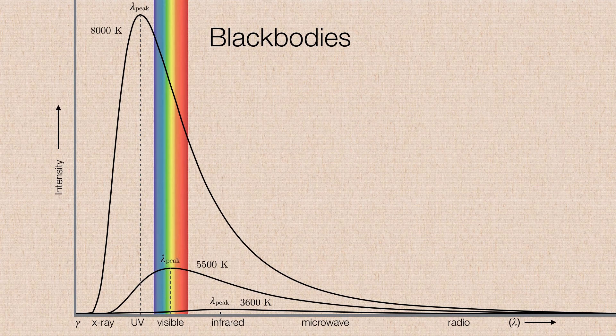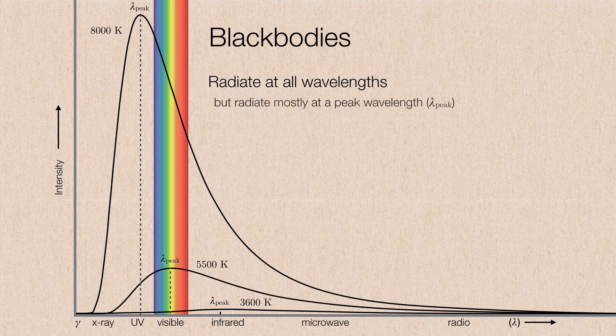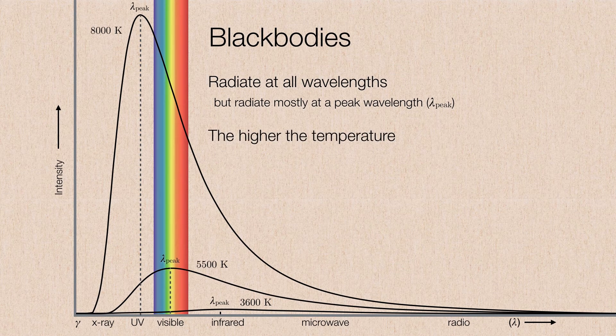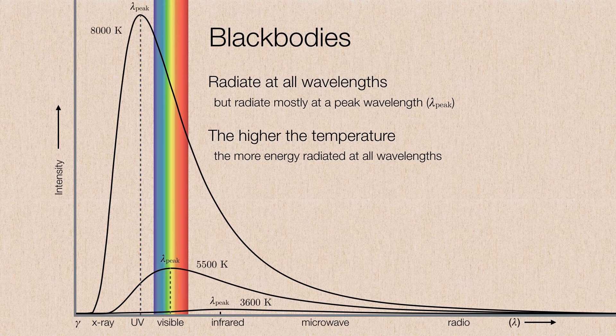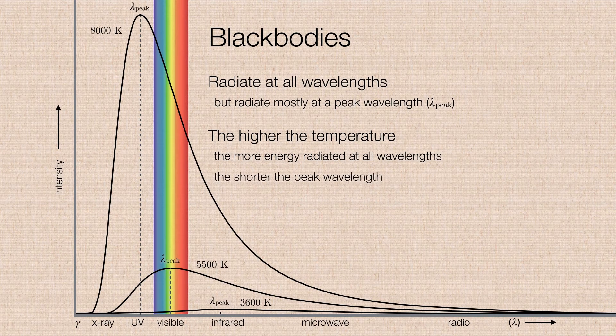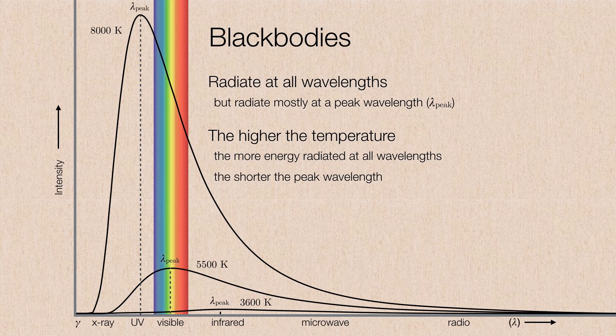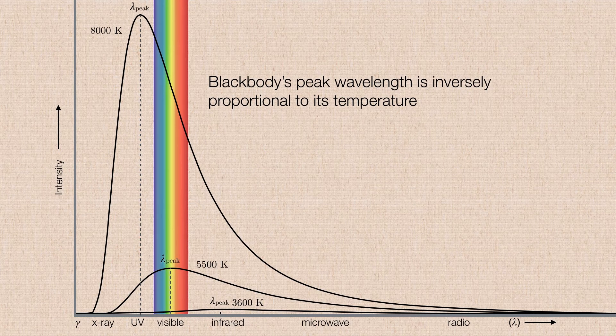So again, black bodies will radiate at all wavelengths, but they're going to radiate mostly at some peak wavelength. And you see a clear relationship here that the higher the temperature, the more energy is radiated at all wavelengths, the shorter the peak wavelength. So the black body's peak wavelength is inversely proportional to its temperature.